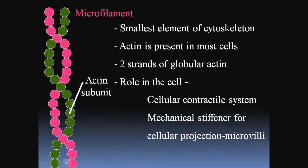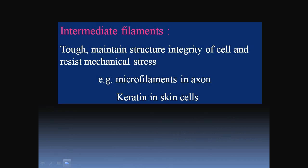Microfilaments are the smallest element of the cytoskeleton. Actin is present in most cells, and two strands of globular actin are an important part of their structure. Intermediate filaments are tough, maintain structure and integrity of the cell, and resist mechanical stress — examples include neurofilaments in axons, keratin in skin cells.